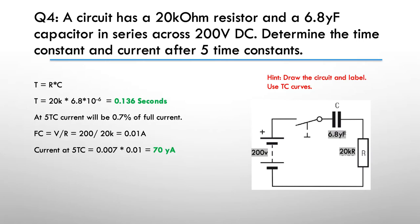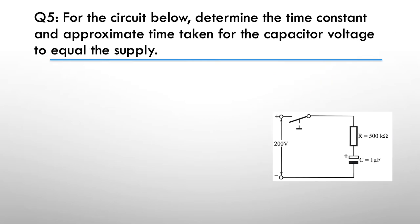Remember in this particular case we are going down — the current is going down. Question five: for the circuit below, determine the time constant and approximate time taken for the capacitor voltage to equal the supply voltage.